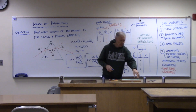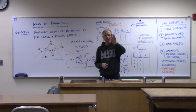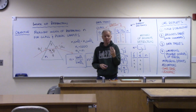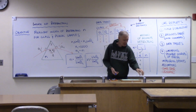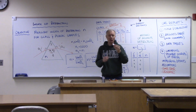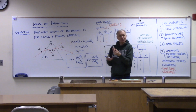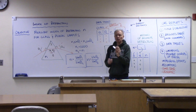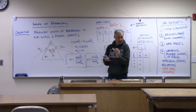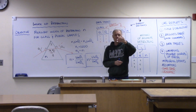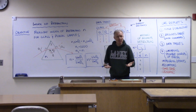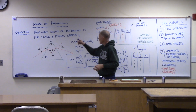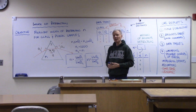I've got the samples right here. Here is our glass sample — it looks like a triangular prism, a kind of flattened triangular prism of glass. And then we have a plastic sample also, which is also a triangular prism, just taller. Those are the two samples we want to work with, and we want to find out how much they slow down light — what their index of refraction is.